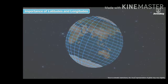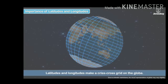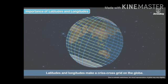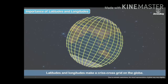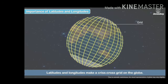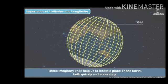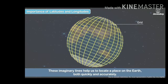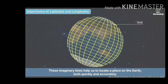These latitudes and longitudes make a criss-cross grid on the globe — like a table with columns and rows. This grid, made up of imaginary lines, helps us to locate any place on the Earth both quickly and accurately.